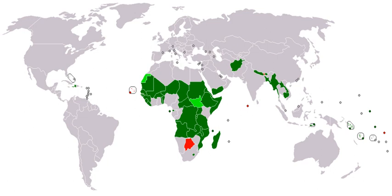Kofi Annan, former Secretary-General of the United Nations, defined a developed country as 'one that allows all its citizens to enjoy a free and healthy life in a safe environment.' Development can be measured by economic or human factors. Developing countries are, in general, countries that have not achieved a significant degree of industrialization relative to their populations, and have, in most cases, a medium to low standard of living.